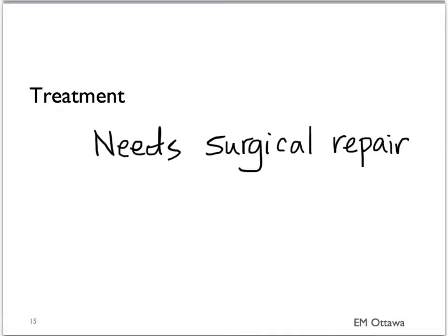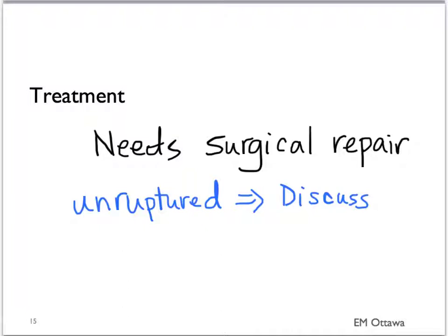AAA should be treated by surgery. For the patient with an unruptured AAA, we should discuss the case with your consultant. For the patient with a ruptured AAA, they need to go to the operating room for definitive repair. Before the patient goes to the OR, we need to resuscitate them in the emergency department.